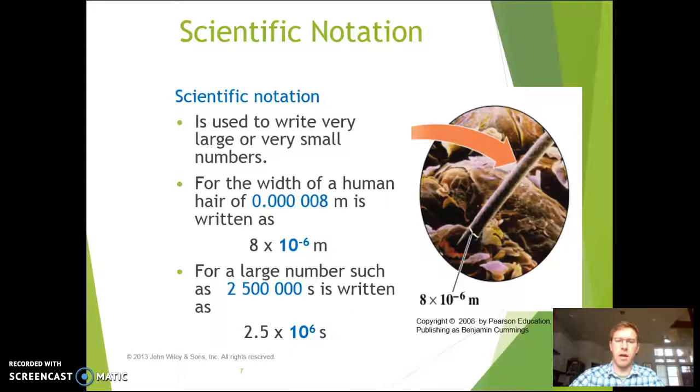a number between 1 and 10 multiplied by a power of 10. So for example, the width of a human hair, which is 8 micrometers, can be written as 8, the coefficient, multiplied by 10 to the negative 6, the power of 10, meters. A large number like 2.5 million seconds can be written as 2.5, the coefficient, times 10 to the 6th power of seconds.